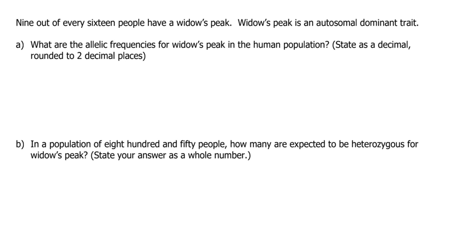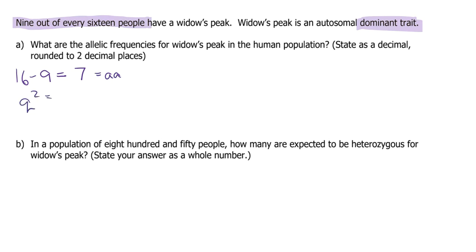9 out of every 16 people have a widow's peak. Widow's peak is an autosomal dominant trait, so that means the 9 out of every 16 people is dominant. We always want to start with recessive, so if 9 out of 16 are dominant, 16 minus 9 is 7 — those are the number of recessives. So that is our q squared: q squared equals 7 out of 16.